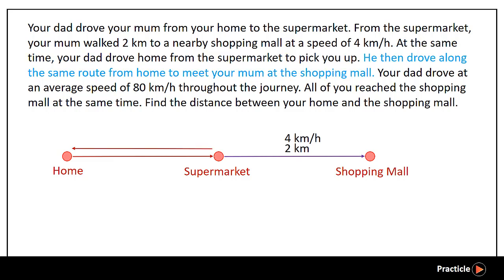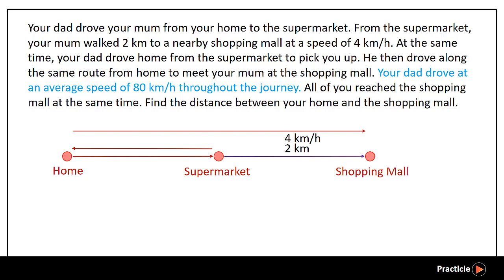He then drove along the same route from home to meet your mom at the shopping mall. Throughout the whole journey, your dad traveled at a speed of 80km per hour. Finally, all of you reach the shopping mall at the same time, and the question is asking us to find the distance between your home and the shopping mall.